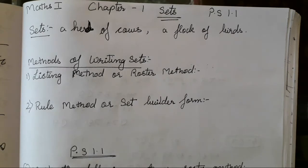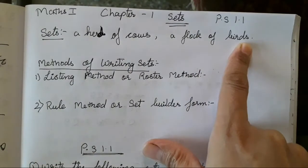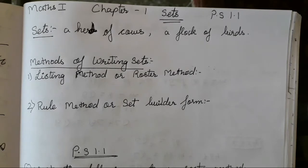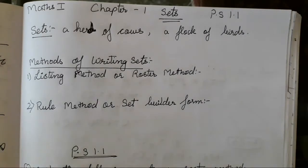So in this chapter children, we are going to learn about sets. Now what are sets? When we put or categorize few things into a group, it is known as sets. For example, a herd of cows, a flock of birds, a pack of cars. These are few examples. That means we have put few things into a group which belongs to that group only.